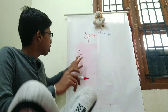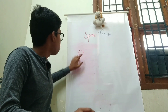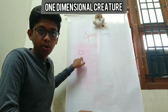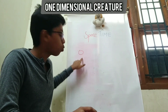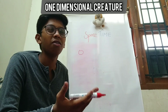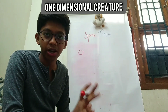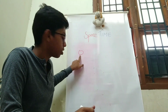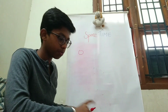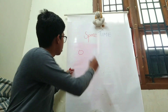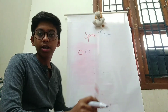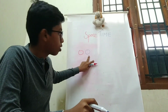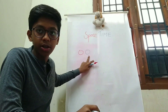Now here is a ball. This ball is a one dimensional creature. Red color one dimensional creature and blue color one dimensional creature.